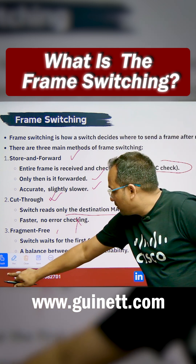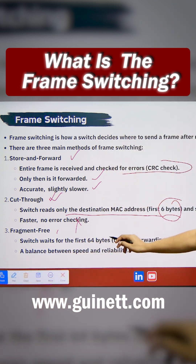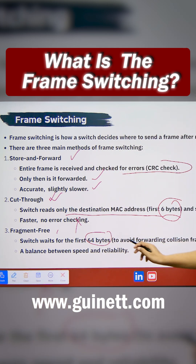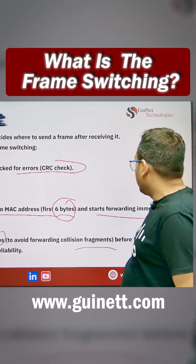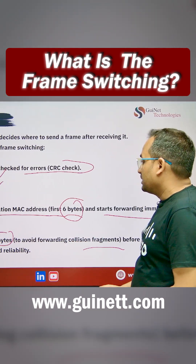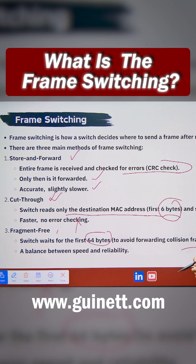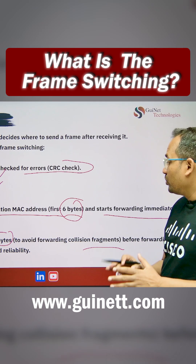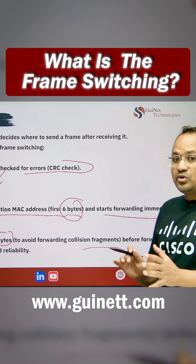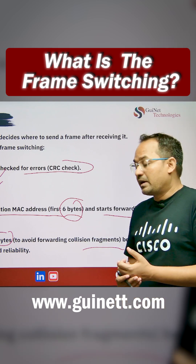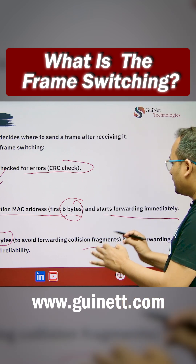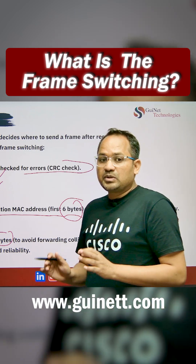The third method is Fragment Free. The switch waits for the first 64 bytes to avoid forwarding collision frames before forwarding any packet. It provides a balance between speed and reliability, making sure the packet is not fragmented. By waiting for the first 64 bytes, the switch ensures no forwarding collision happens during fragmentation of the packet.